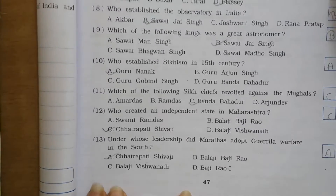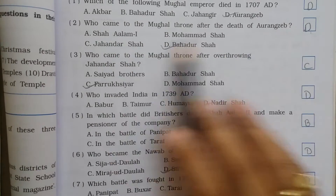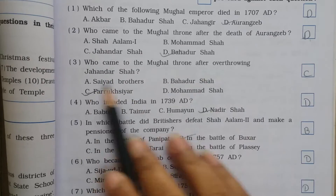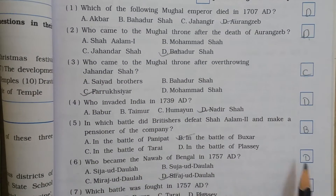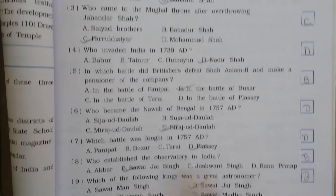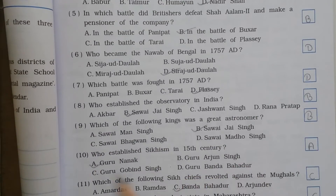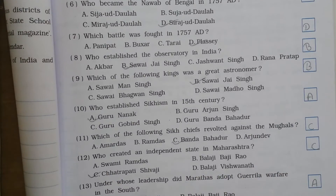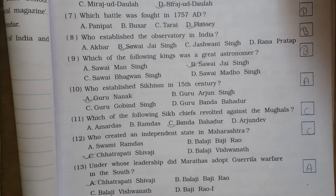The answer is A. So the MCQ answers summary: 1st is D, 2nd is D, 3rd is C, 4th is D, 5th is B, 6th is D, 7th is D, 8th is B, 9th is B, 10th is A, 11th is C, 12th is C, and 13th is A. Clear?